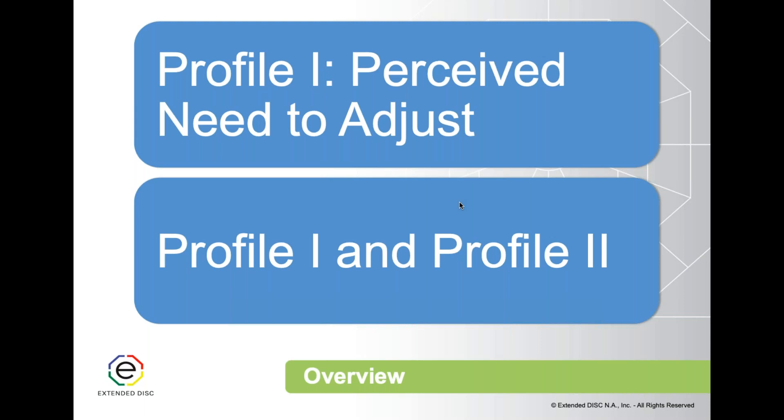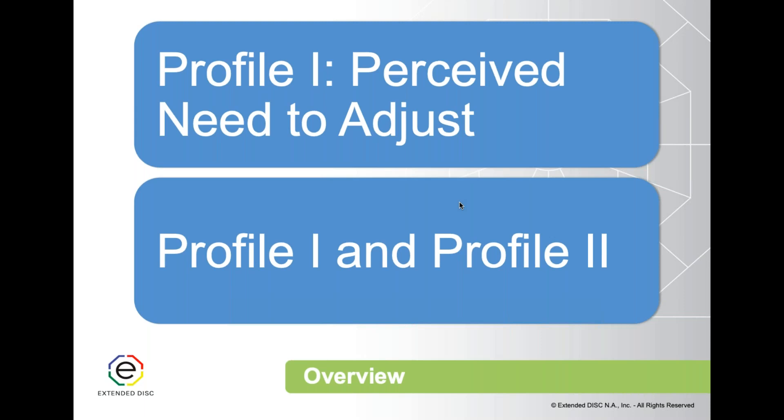Profile 2 is stable but not rigid. Perception is key to understanding Profile 1 — it is our belief that if we made these adjustments we would be successful. But that doesn't automatically make us successful, and there's no guarantee the person is actually going to make those adjustments. That's why we focus more on Profile 2 — that is the grounded who we are.